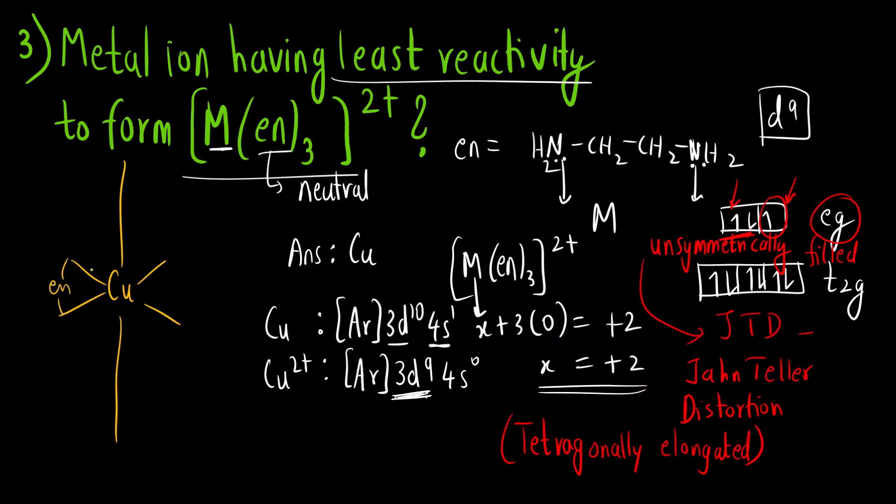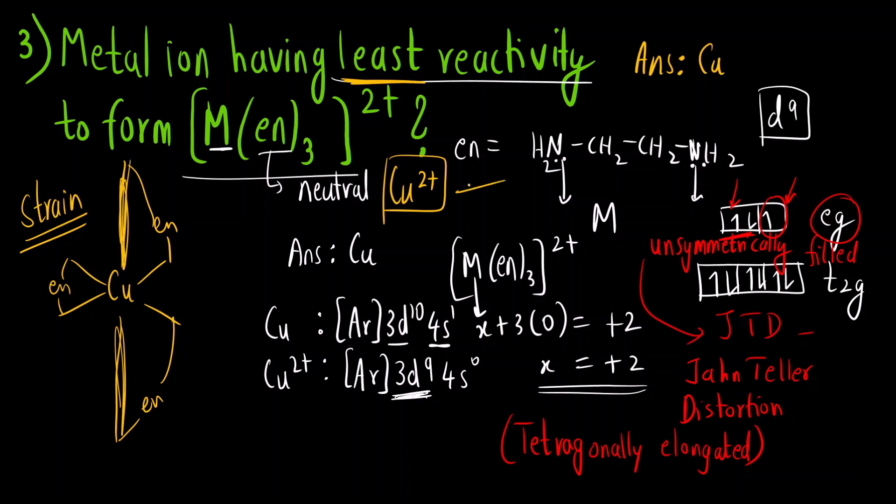So for copper if I draw this complex, for copper axial bonds are very long and the equatorial bonds are shorter. So you can see this ring that is formed between the ethylene diamine and copper because of this long axial bonds there is strain in the system. So that is why the reactivity will be least. So the correct answer for this question is copper, that is copper 2+ will be least stable and hence it will be least reactive.